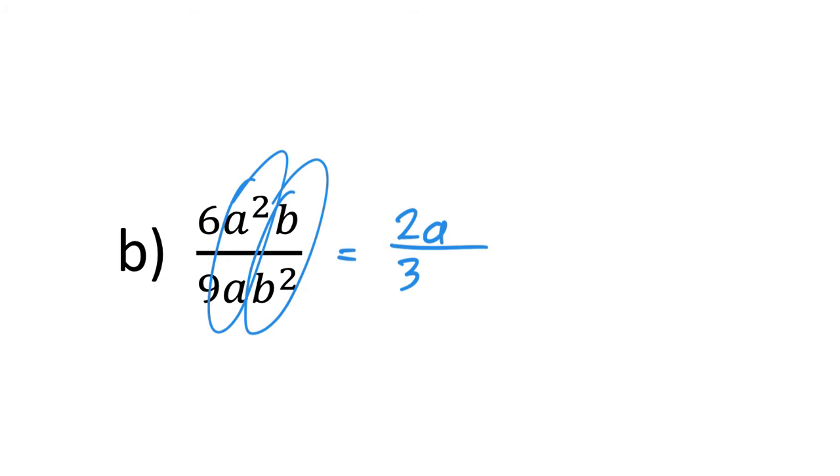Likewise you've got the B and the B squared. B goes into itself once so it just disappears in the top line, and B goes into B squared B times. And there you have it. There's that one done.